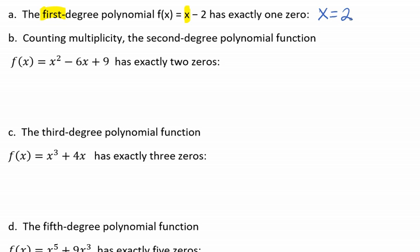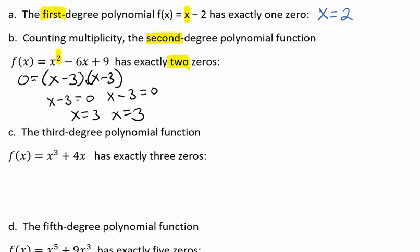Counting multiplicity, the second-degree polynomial f(x) = x² - 6x + 9 has exactly two zeros because it's a second degree polynomial. We can find this by factoring. This is going to be (x - 3)(x - 3) = 0. When we set up our zero product property, we're going to get x = 3 and x = 3. So we have our two zeros.